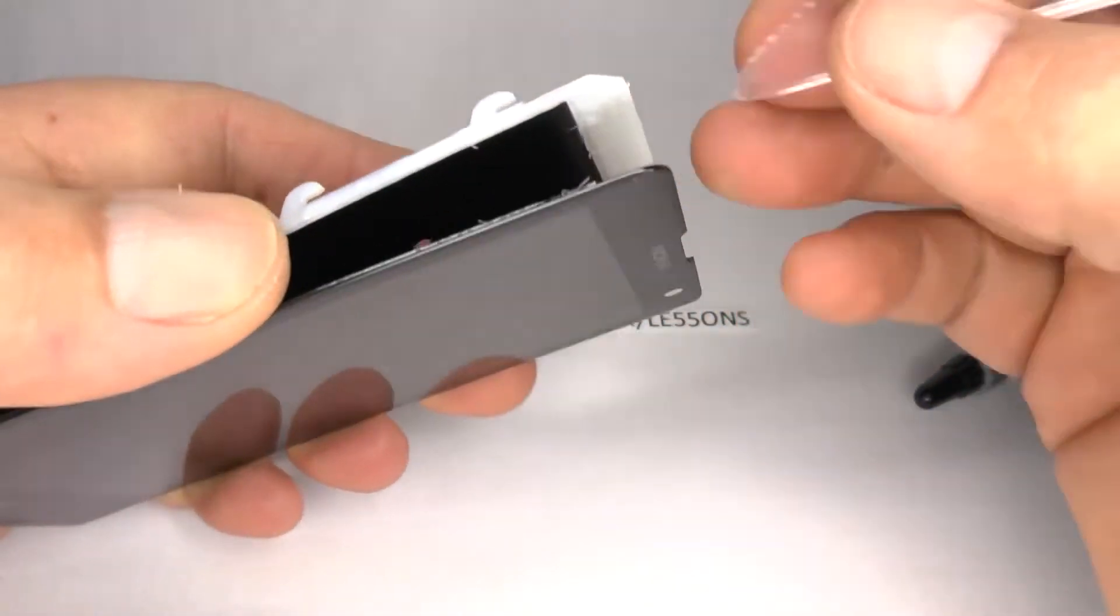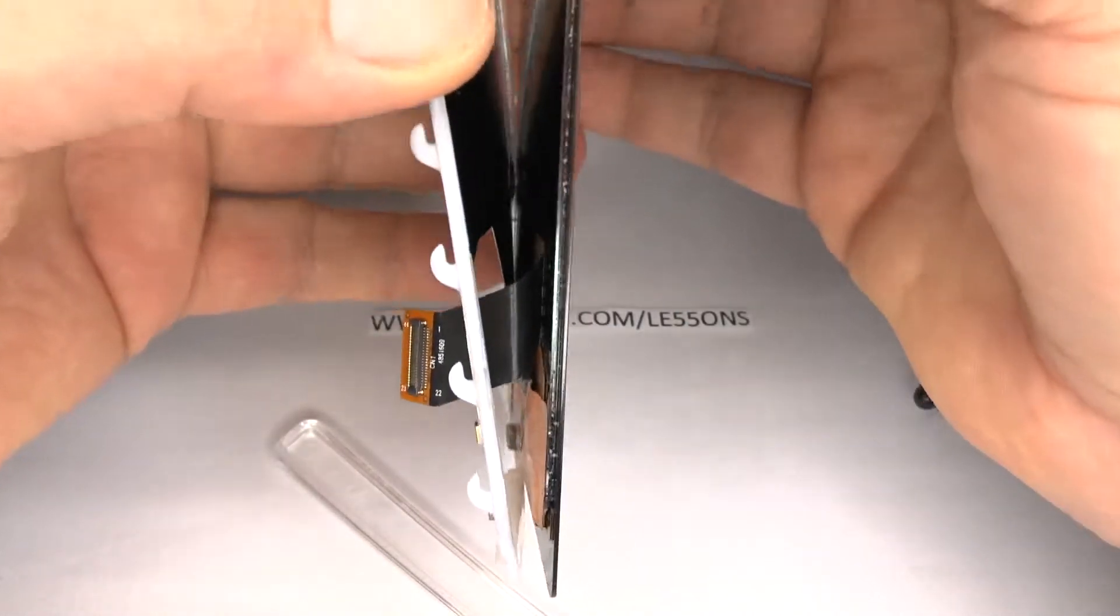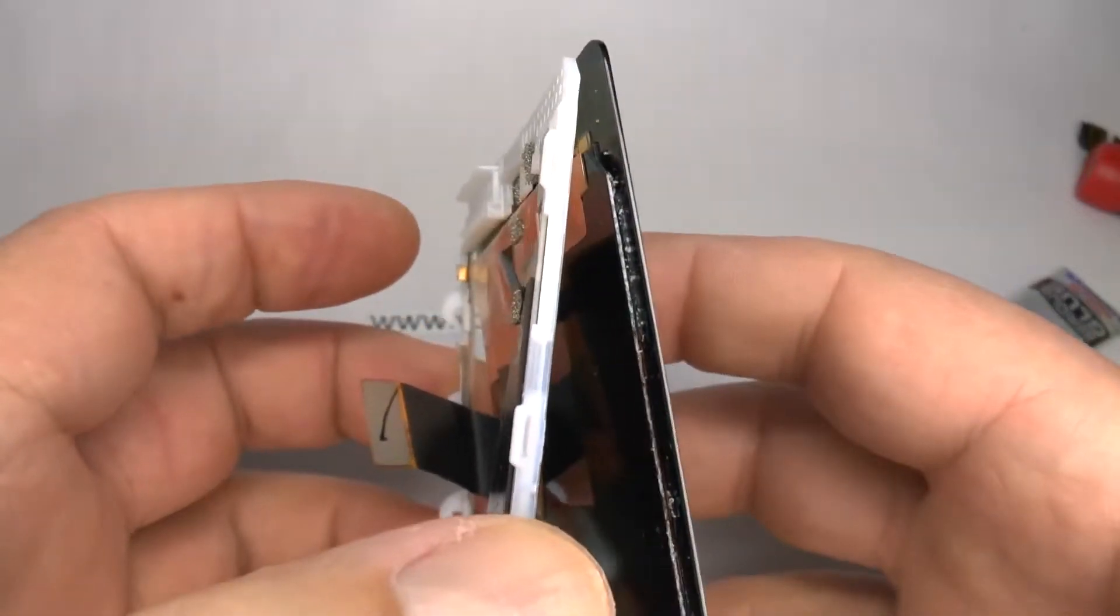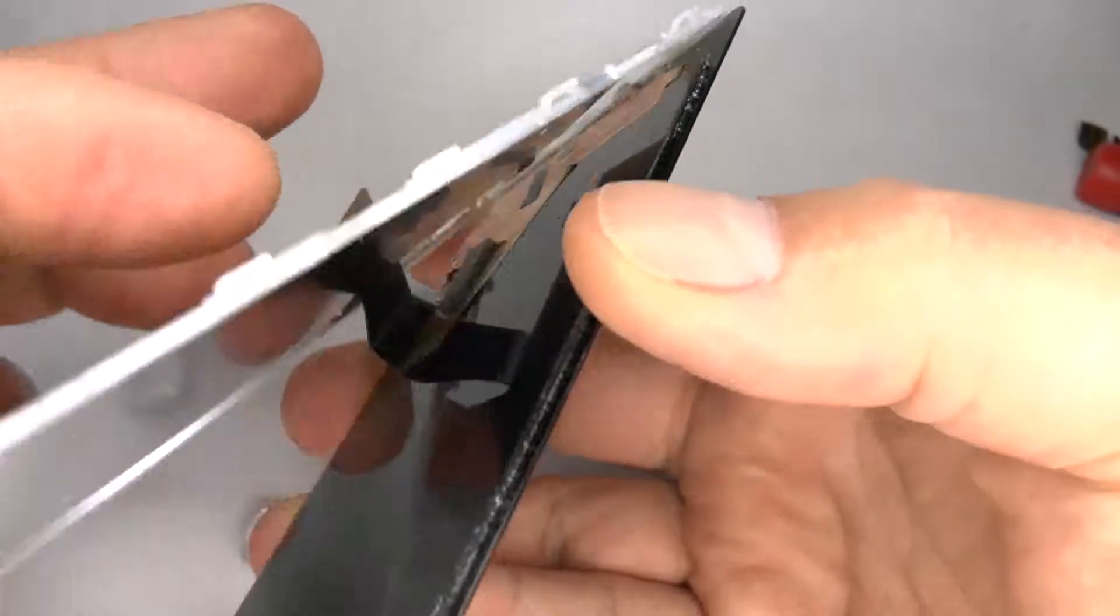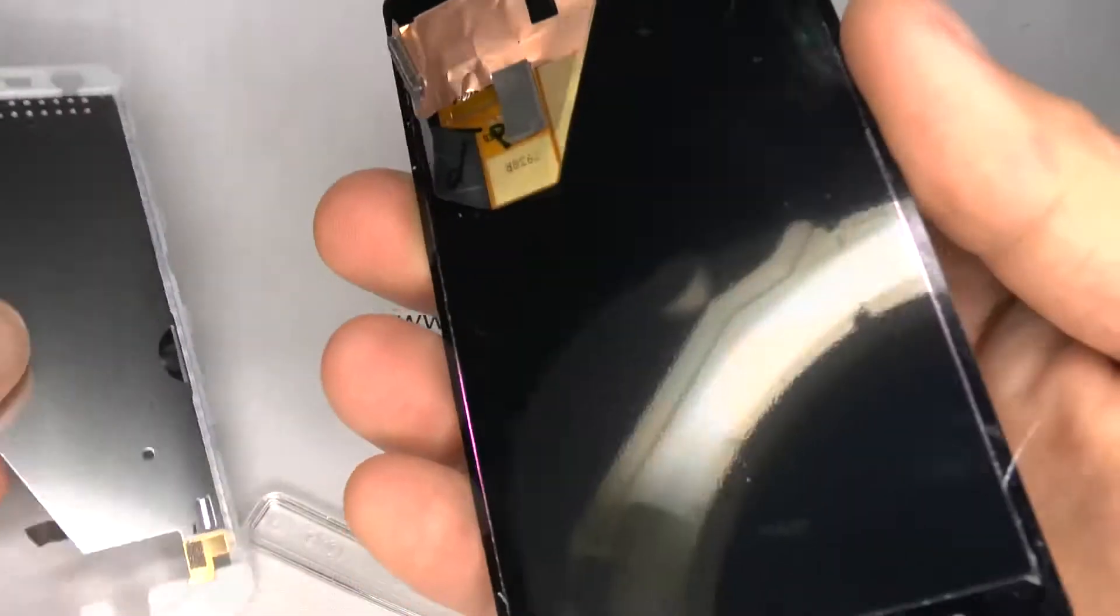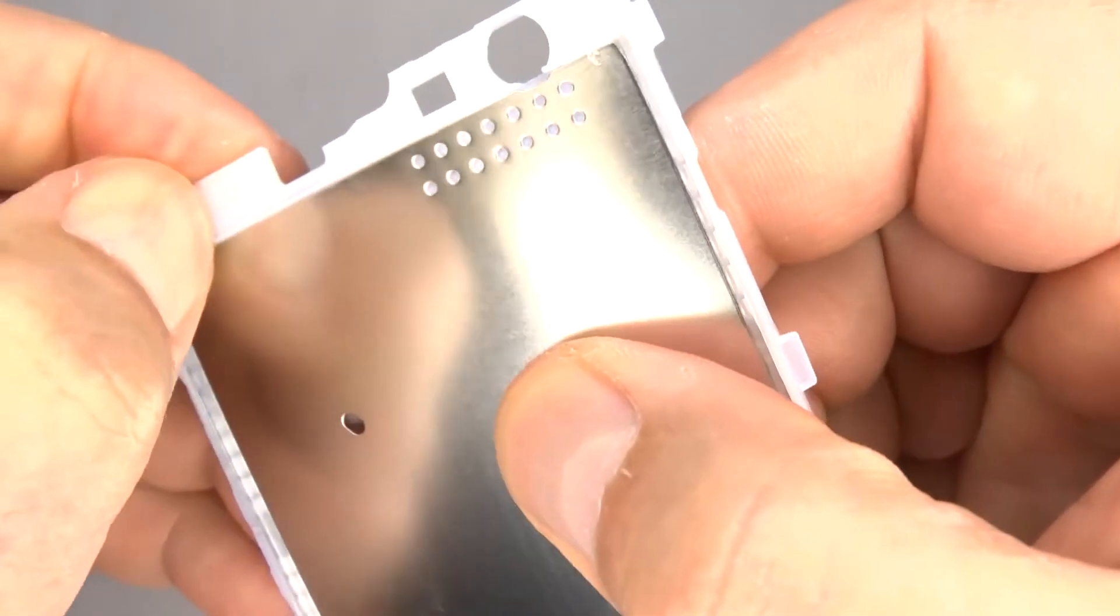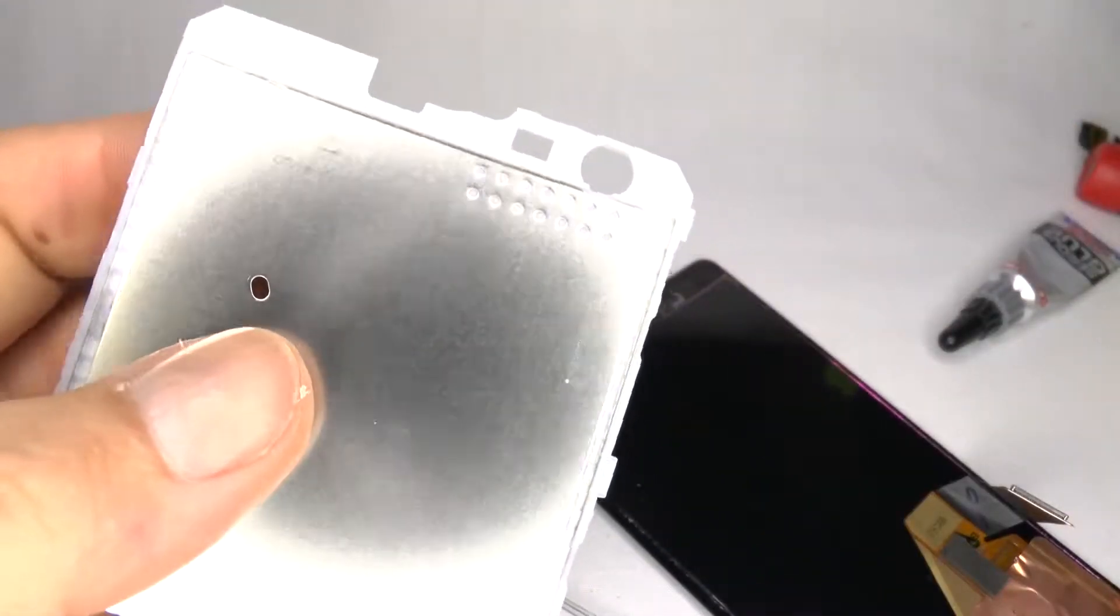Once the frame is completely separated on the edges, you can lift it away. Now try and clean any remaining adhesive off the frame.